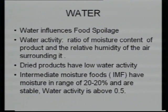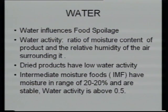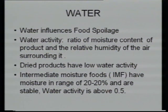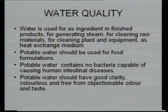The other important constituent is water. Water plays an important role in food spoilage. The term we use is water activity — the ratio of moisture content of the product and the relative humidity of the surrounding air. Dry products have low water activity. Products with poor shelf life have high water activity. Fruit jellies, syrups are intermediate moisture foods with moisture in the range of 20 to 40% and water activity above 0.5. If you want a longer shelf life product, the water activity should be as minimum as possible.